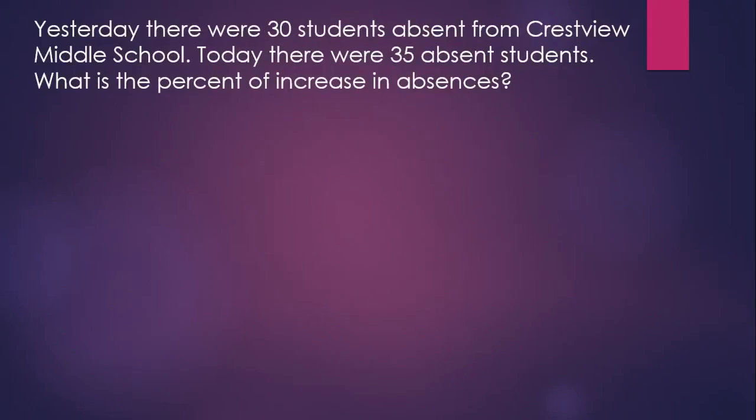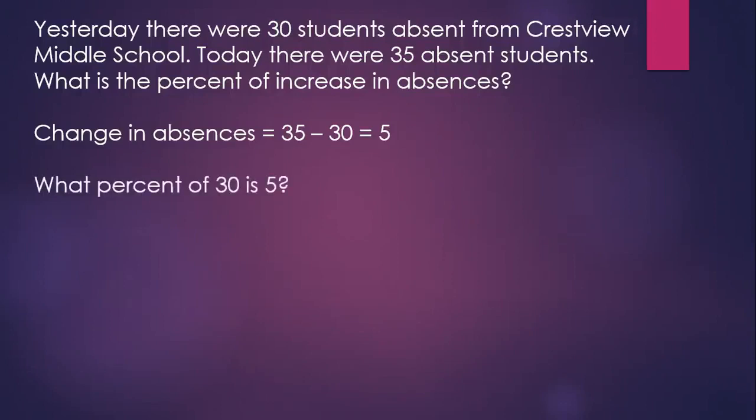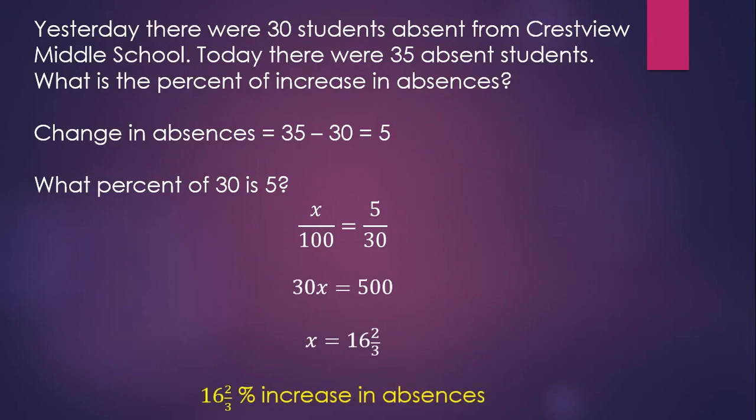Yesterday, there were 30 students absent from Crestview Middle School. Today, there were 35 absent students. What is the percent of increase in absences? The first thing we have to find is how much the absences changed. So we have 35 absences today, 30 yesterday. That means we had a net change of 5 absences. Then what we want to find is what percent of the original amount, 30, is that 5 absences. So we're looking for the percent when the part is 5 and the whole is 30, which means the percent increase in absences is 16 and 2 thirds percent.